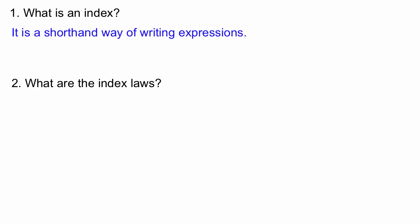An index is just a shorthand way of writing an expression. For example, if I had a times a times a, there are three a's being multiplied together. Using an index, we can put a three up here and that three simply tells us we're going to multiply the base a together with itself three times.